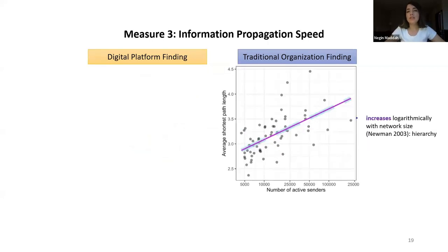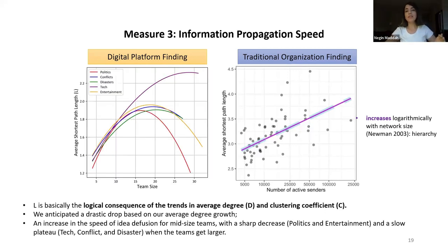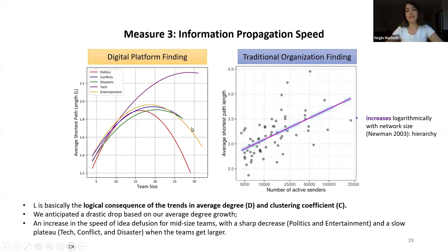The third measure is the speed of information propagation. In recent studies, when the network gets larger, the shortest path length between pairs of nodes grows, so speed goes down. But in Wikipedia, this pattern holds for mid-size teams — after that, the shortest path length actually decreases significantly in some domains.